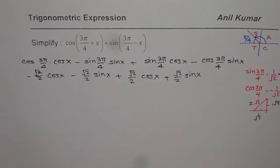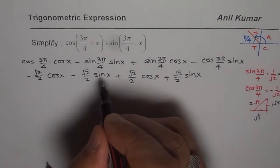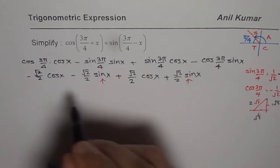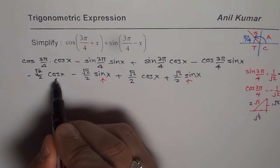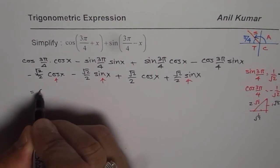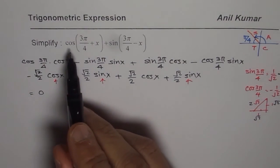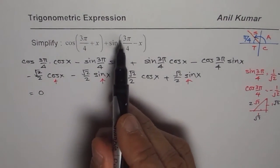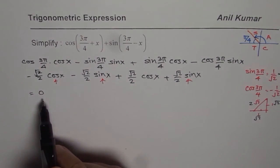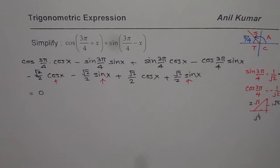Now from here, you can see that these terms will add to 0. On the other hand, these terms will also add to 0. So basically, we get this is equal to 0. So cos(3π/4 + x) + sin(3π/4 - x) is indeed equal to 0. So that is what we get. Thank you.